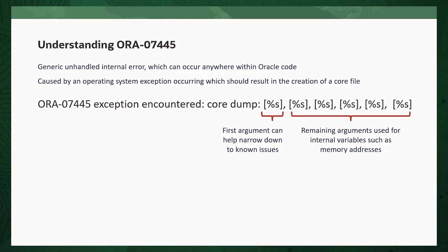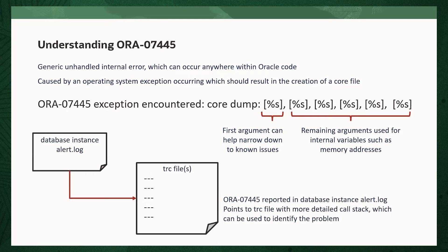The remaining arguments are used to show various internal variables such as memory addresses. Whenever an ORA-7445 error occurs, it will be logged in the database instance alert log, which will also point to a trace file. This trace file will contain more detailed call stack information, which may be required to identify the error.